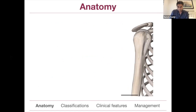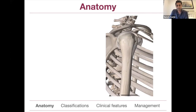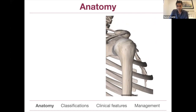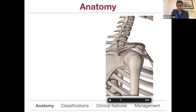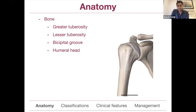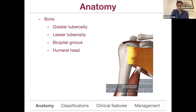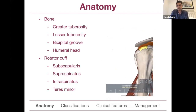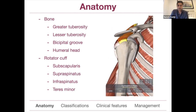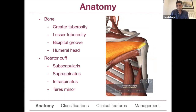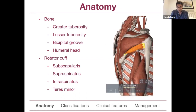Looking at the anatomy of the proximal humerus, there's a knobby bit at the front called the lesser tuberosity and one on the side called the greater tuberosity. There's a bicipital groove between them where the long head of biceps runs, and obviously you've got the humeral head. The subscapularis is one of the four rotator cuff muscles attaching onto the lesser tuberosity, and the supraspinatus attaches onto the superior aspect of the greater tuberosity.